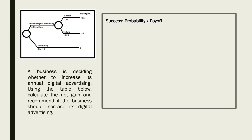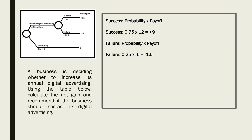For success, we need to do probability times payoff: 0.75 is the probability times by the payoff of +£12 million, which gives us +9. Next we look at the other side — failure — probability times payoff again: 0.25 times by minus 6 (the loss of 6), which equals minus 1.5.